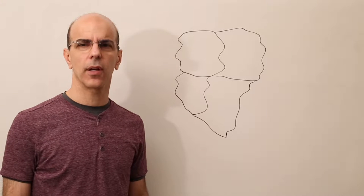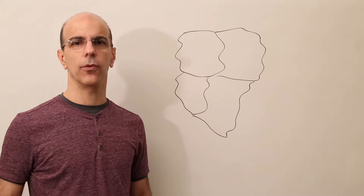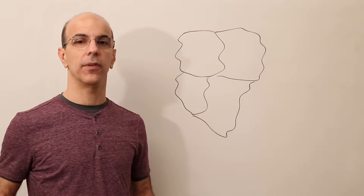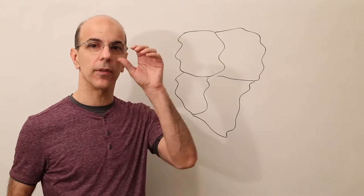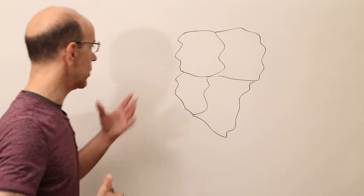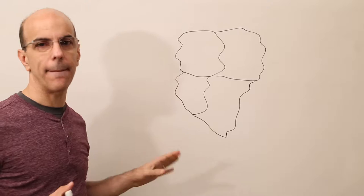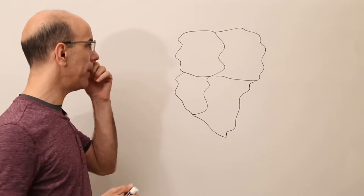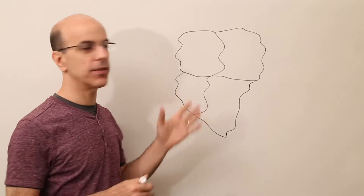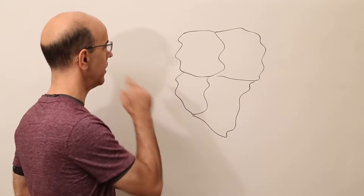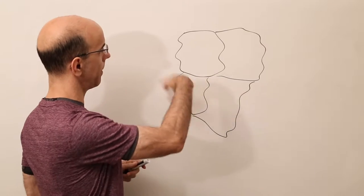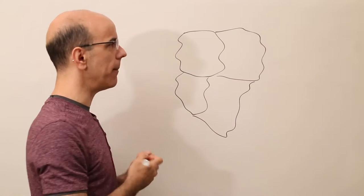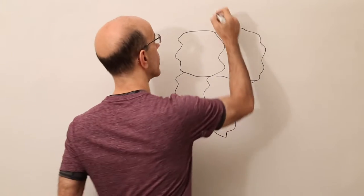The first thing I want to do is talk about what the four-color map problem is. So here's just an arbitrary map. What map makers realized is that if they wanted to color a map, they only needed at most four colors.